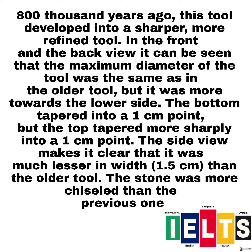Now I will read body paragraph two. 800,000 years ago, this tool developed into a sharper, more refined tool. In the front and the back view, it can be seen that the maximum diameter of the tool was the same as in the older tool, but it was more towards the lower side. The bottom tapered into a 1 cm point but the top tapered more sharply into a 1 cm point. The side view makes it clear that it was much lesser in width than the older tool. The stone was more chiseled than the previous one.